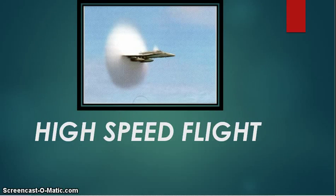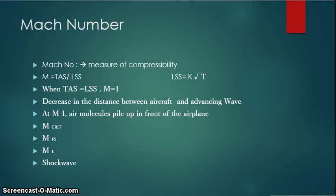The first thing that comes to mind when we hear high speed flight is Mach number. What is Mach number? It's basically a measure of the compressibility of air because air is a fluid and it is compressible. Mathematically, Mach number equals true airspeed divided by local speed of sound. Local speed of sound is a constant K times the root of absolute temperature or temperature in Kelvin. The constant K is approximately 38 point something, and for calculations you can take it as 39.